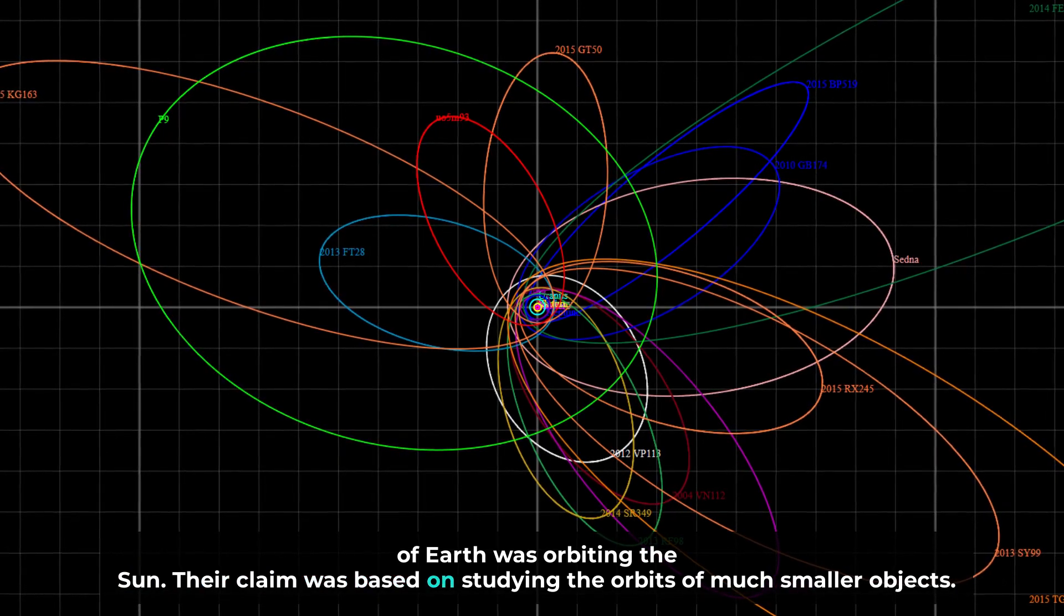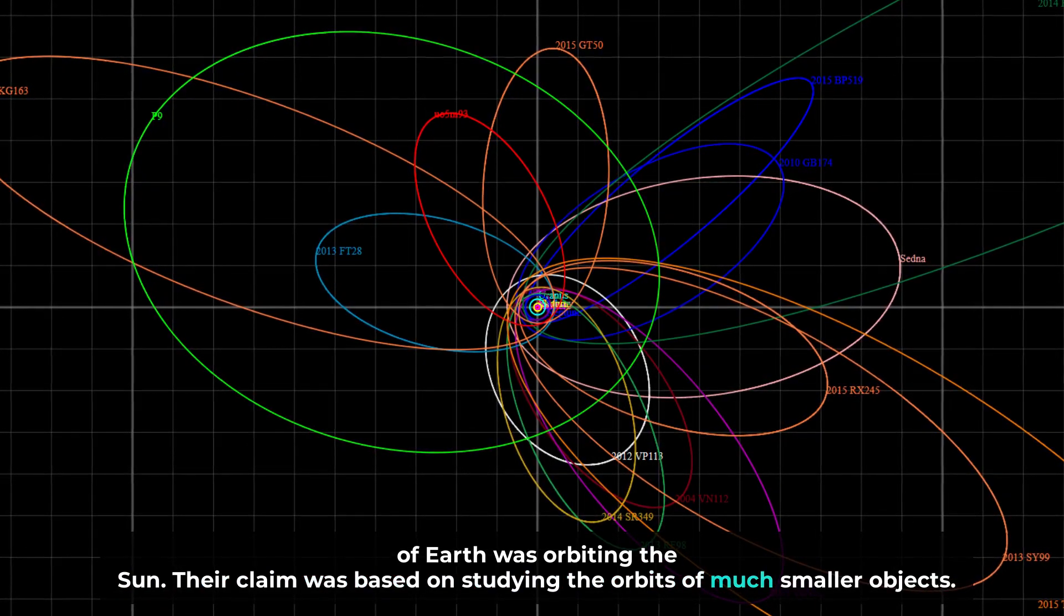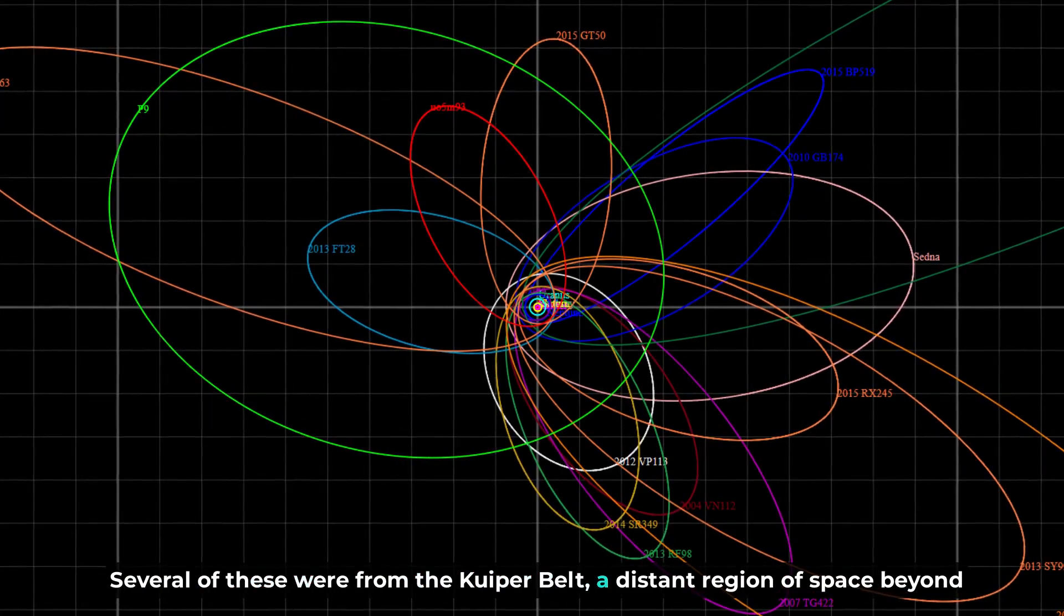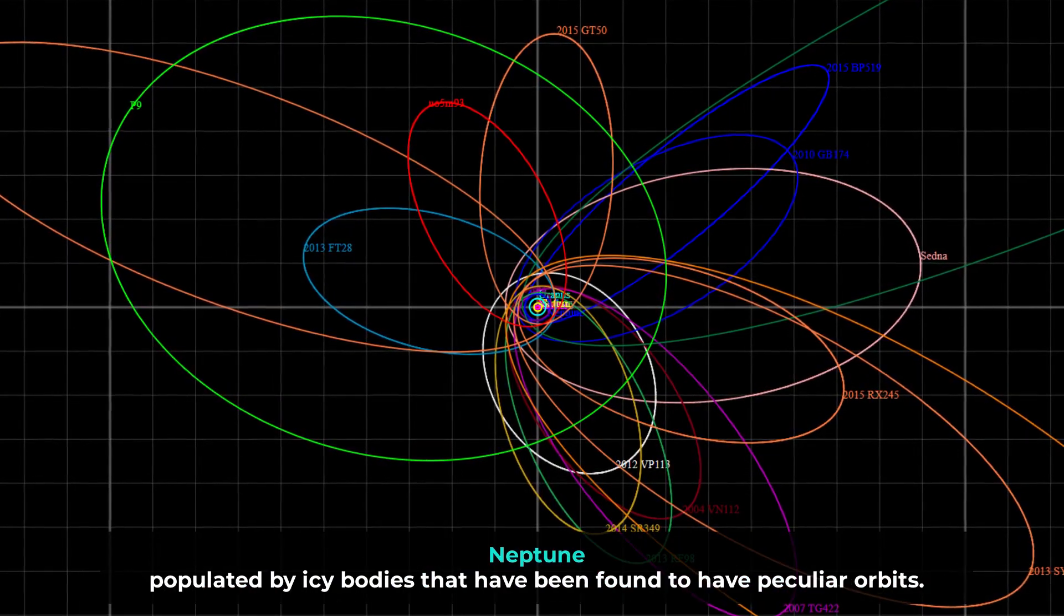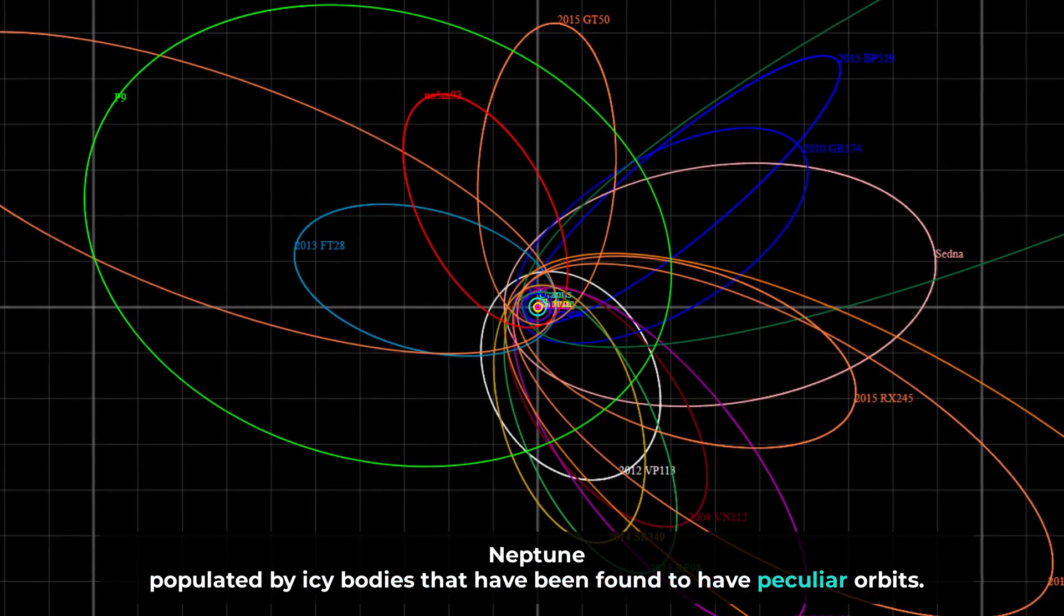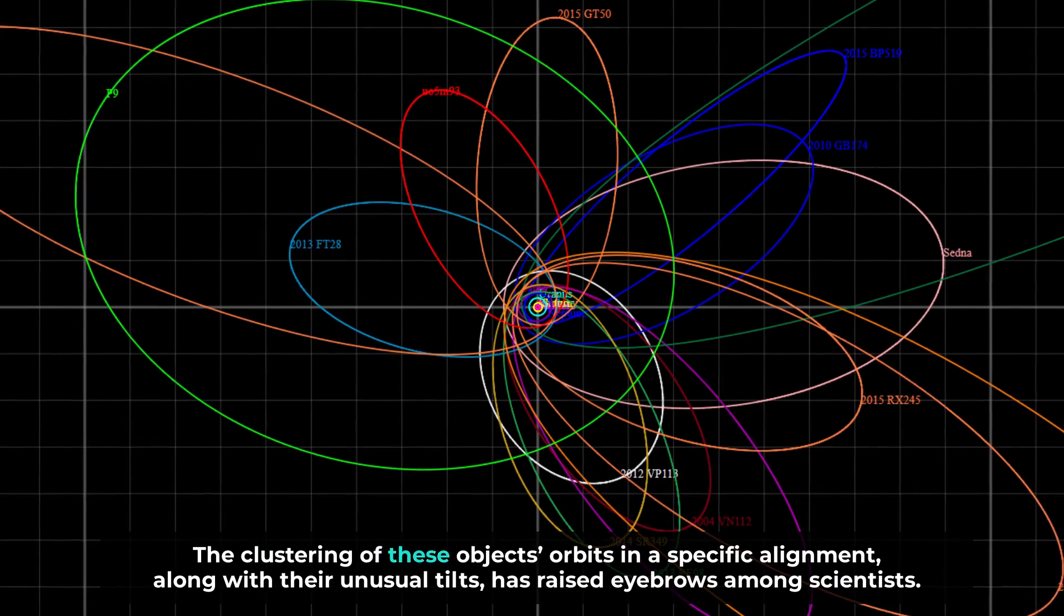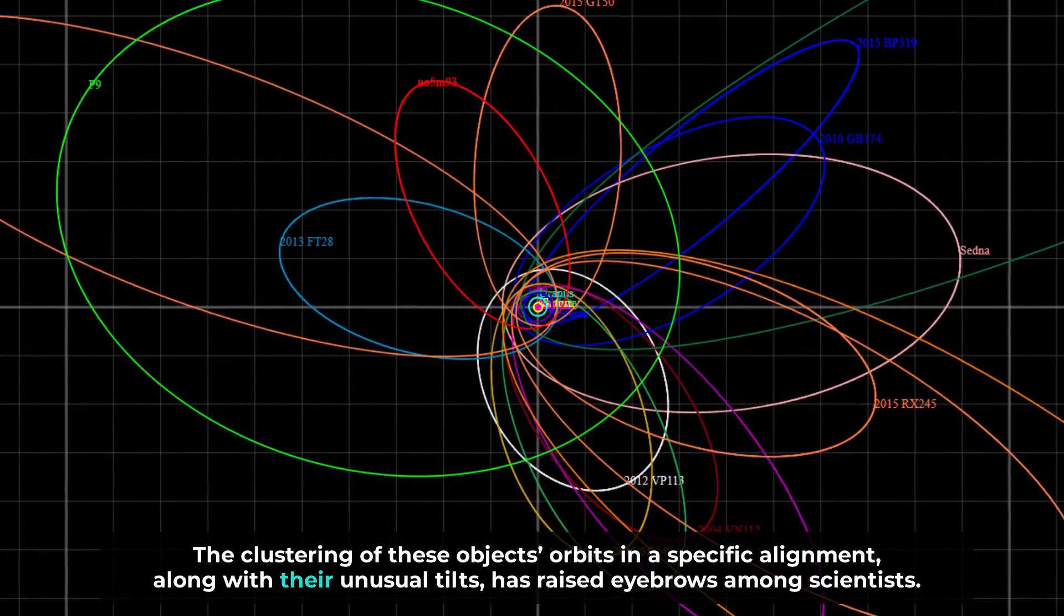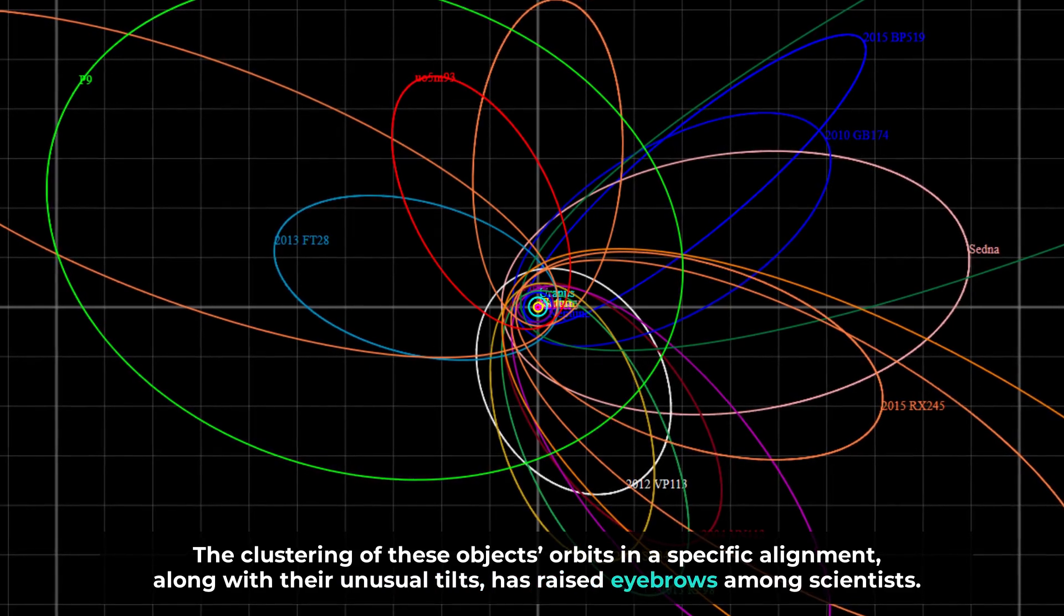Their claim was based on studying the orbits of much smaller objects. Several of these were from the Kuiper Belt, a distant region of space beyond Neptune populated by icy bodies that have been found to have peculiar orbits. The clustering of these objects' orbits in a specific alignment, along with their unusual tilts, has raised eyebrows among scientists.